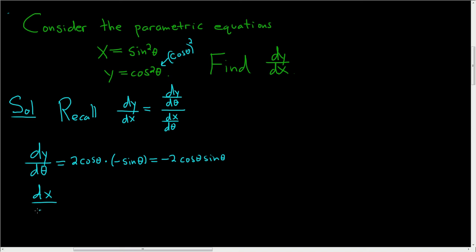dx/dθ, same thing. We want to think of the sine function here as being the sine function quantity squared. So we bring the two downstairs, we don't touch the inside, so we get 2 sine theta times the derivative of the inside, which is cosine.